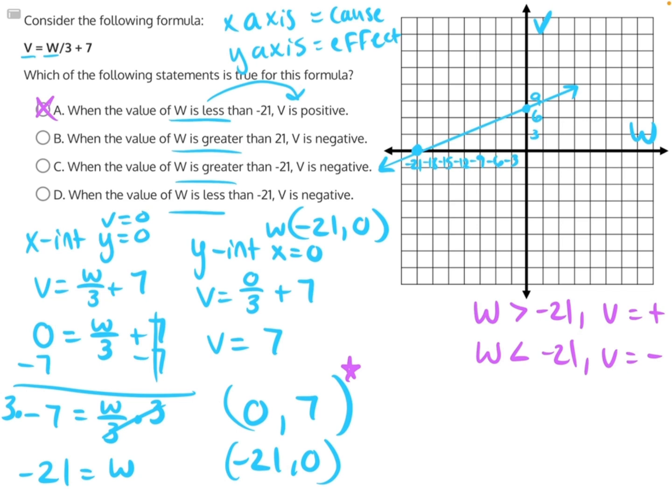B says when the value of w is greater than 21, positive, which would be over here, v is negative. Well, if we were to estimate where that might land on the graph, let's say about here, everything to the right of this point, greater than, would be in the positive v territory, not in the negative v territory. So that means that B is also incorrect.